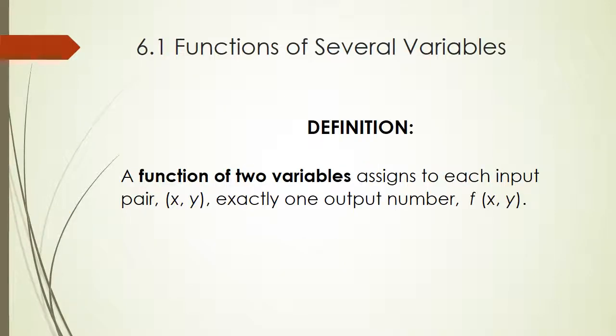A function of two variables assigns to each input pair, x, y, exactly one output number, f of x, y.